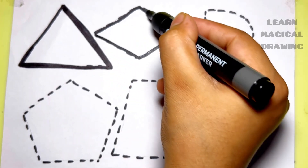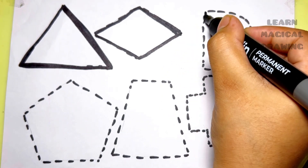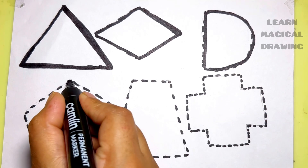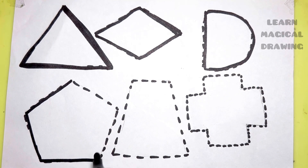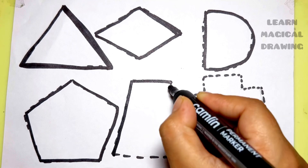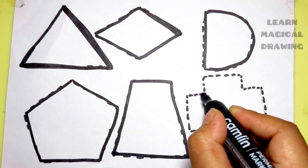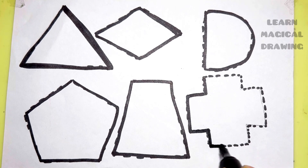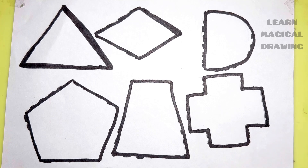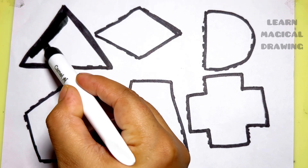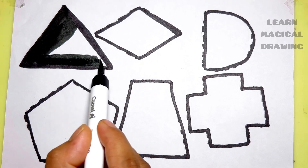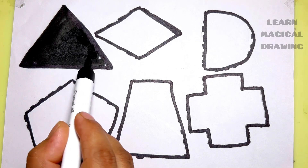Triangle, rhombus, semi-circle, pentagon, trapezoid, cross. Black color, triangle.